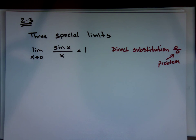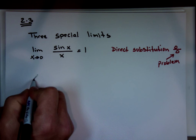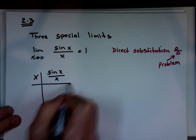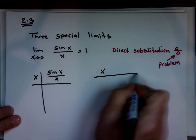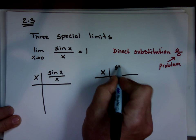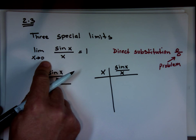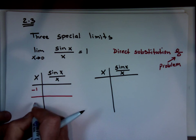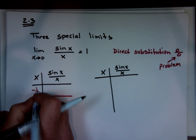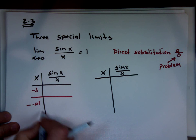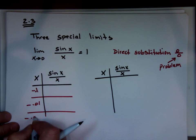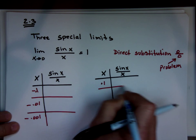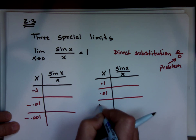So how do we find the answer? We have to look at the limit and make a table. We'll look at it from the left side and from the right side to see what's going on — is the y-value approaching something? From the left side, we'll start with negative 0.1, then negative 0.01, then negative 0.001. From the right side, we'll try 0.1, then 0.01, then 0.001.